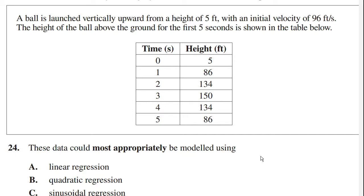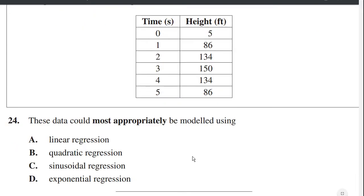So what we notice about the data is that it goes up, it increases, and then it decreases. So right away we know that linear regression cannot work because linear regression only goes in one direction. It does not increase, then decrease. Exponential regressions, they only ever either always increase or they always decrease. They never increase, then decrease. So A and D are both out.